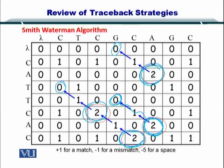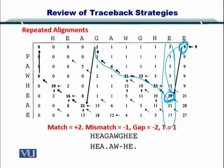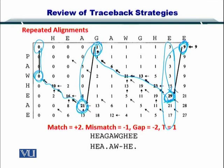For the Smith-Waterman local alignments, we obtained alignments in this way. For the repeated alignments, our traceback started from the first element in the last column, and we jumped to the next column by selecting the highest value — in this column the highest was 29. Then we did a traceback until we reached the first row, then jumped to the highest value in the next column, and traced back until we reached the first column at the 0,0 element.